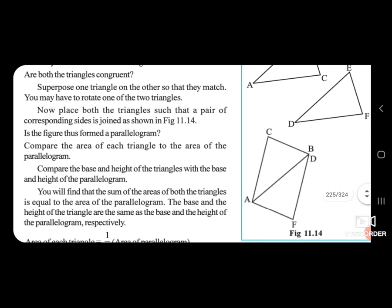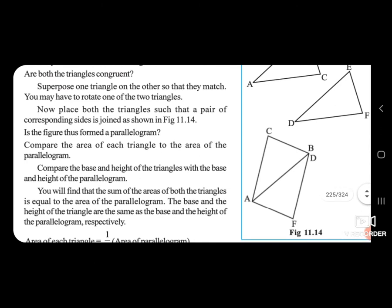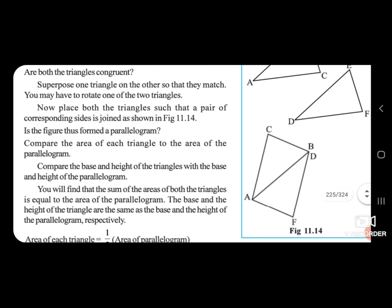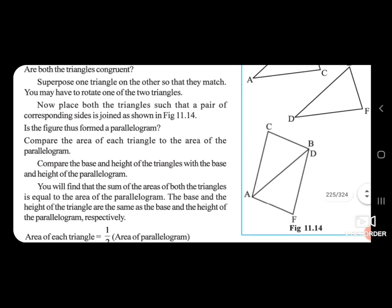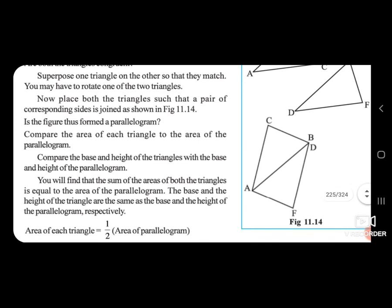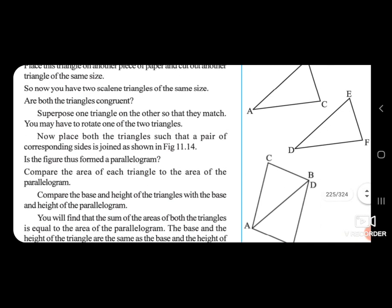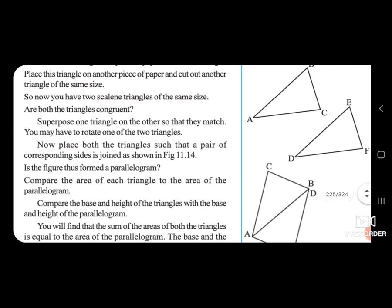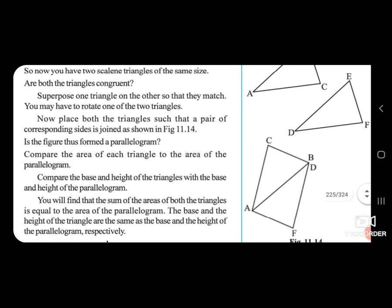Now place both the triangles such that a pair of corresponding sides is joined, as shown in figure 11.14. Here, two triangles are drawn and joined together.